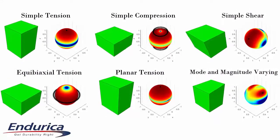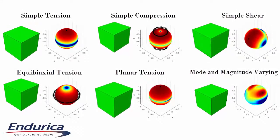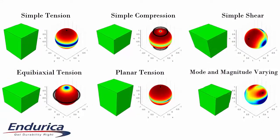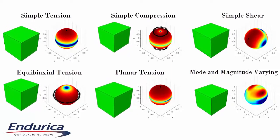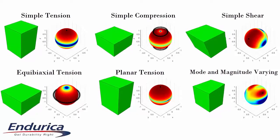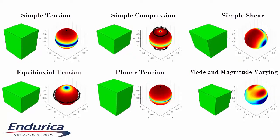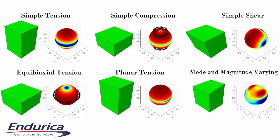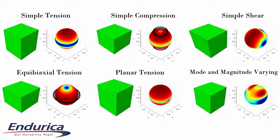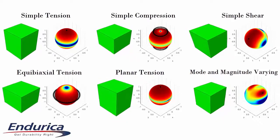Here's the bottom line. Max principal strain or stress can correlate to fatigue life for some simple cases, but they break down as a general purpose rule if crack closure occurs or if the mode of deformation or principal directions are varying. Critical plane analysis is the general purpose rule that works every time.